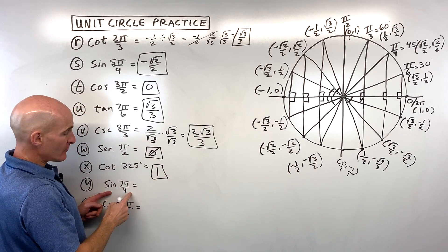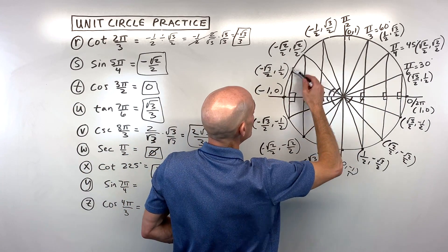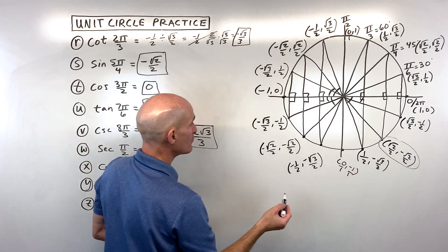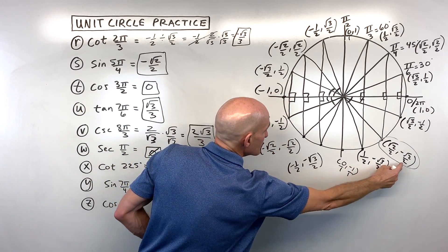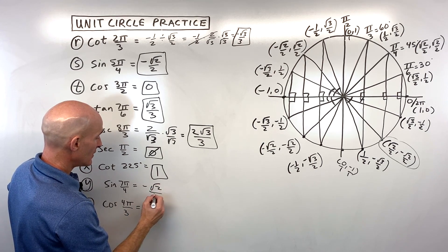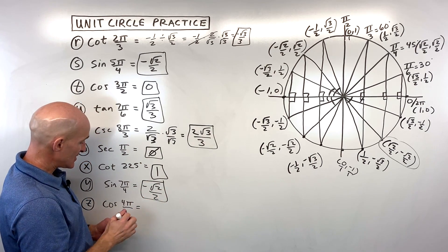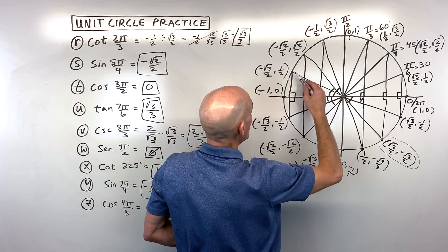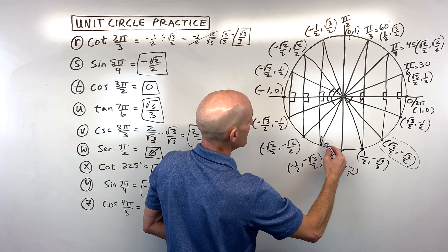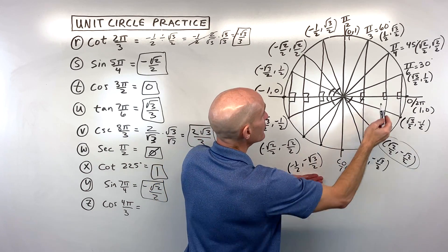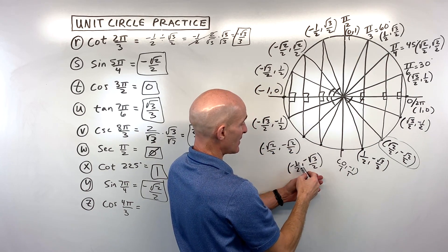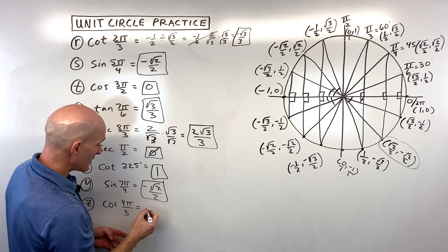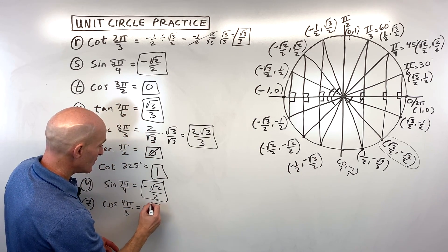Letter Y: sine of 7π/4. Think of this as 1 and 3/4 π — go 1π plus 3/4 of π, landing at the √2/2 point in the fourth quadrant. Sine is the y-coordinate: negative √2/2, since y is negative in the fourth quadrant. Letter Z: cosine of 4π/3. Think of this as 1 and 1/3 π; the reference angle is π/3 (60 degrees). Both x and y are negative in the third quadrant, and cosine (x-coordinate) is negative 1/2.